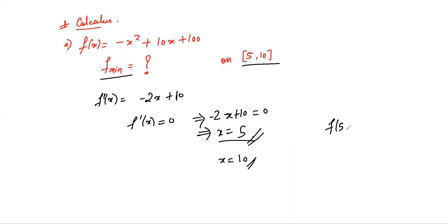So f(5) = -25 + 50 + 100, which is equal to 125.